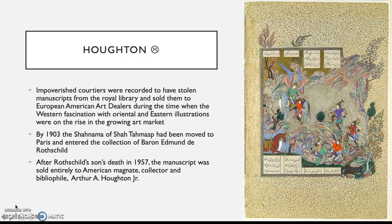Then Houghton happens to it. Impoverished courtiers are reported to have stolen manuscripts from the royal library in the early 20th century and sold them to European and American art dealers, during a time when Western fascination with Oriental and Eastern illustrations was on the rise. By 1903, the Shahnama was moved to Paris and entered the collection of Baron Edmund de Rothschild.